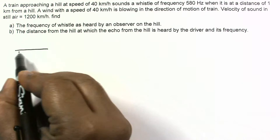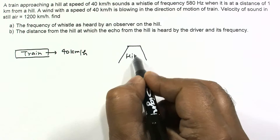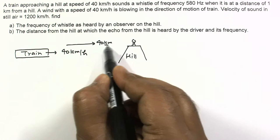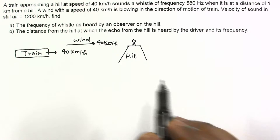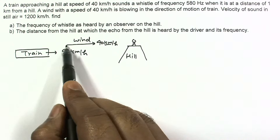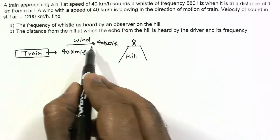It is given that the train is moving with velocity 40 km per hour. There is a hill with an observer on it. Wind is also blowing in the direction of motion of the train with velocity 40 km per hour. In the formula of Doppler effect, all velocities should be in the frame of the medium. If the medium is moving, we have to convert the velocities into the frame of this medium. So I am converting all the velocities into the frame of this medium.